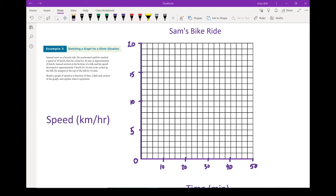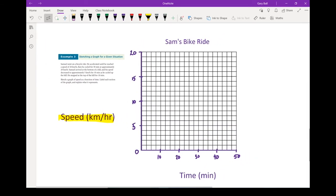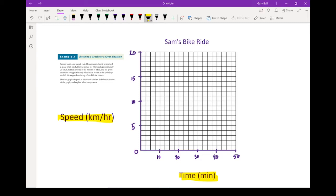Example 3. Sketching a graph for a given situation. What I've got here is I've got a story describing what is happening. We're going to draw a graph that describes it. So Sam went on a bicycle ride. He accelerated until he reached a speed of 20 kilometers an hour. Then he cycled for 30 minutes at approximately 20 kilometers an hour. Samuel arrived at the bottom of the hill and his speed decreased to approximately 5 kilometers per hour for 10 minutes as he cycled up the hill. He stopped at the top of the hill for 10 minutes. So we are graphing this as speed as a function of time. Speed is on the y-axis because it depends on time. The time is on the x. Speed is on the y.